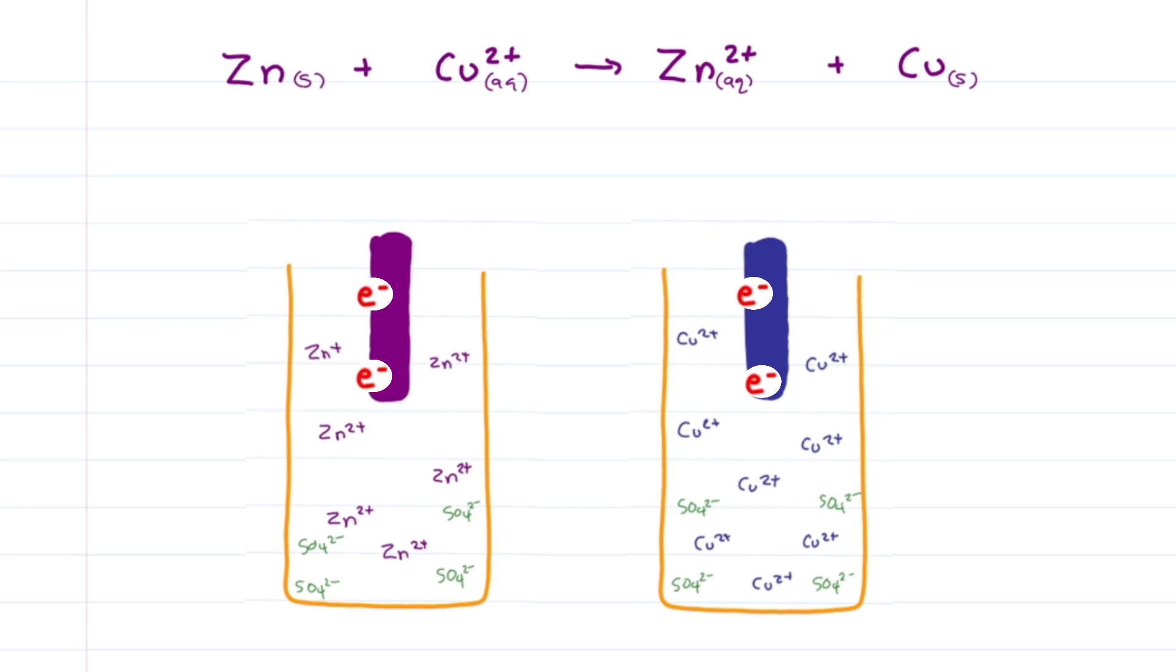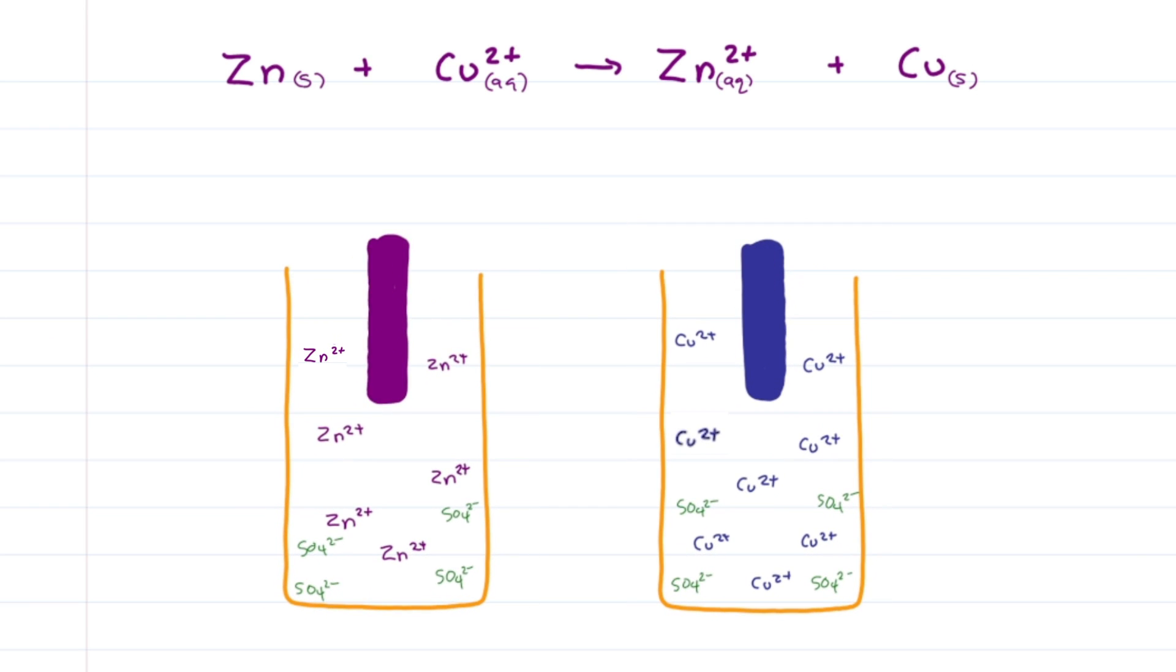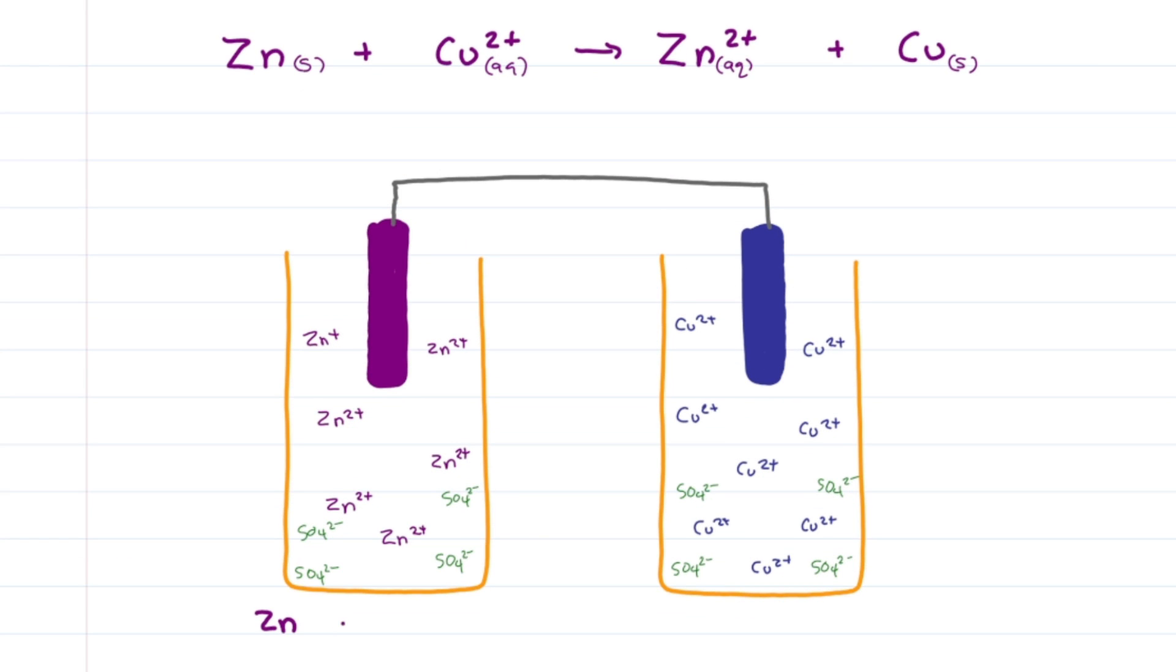And now for the electrons. Wait, they're not connected. We need a non-reactive conducting wire connecting the two electrodes to allow the electrons to flow between the half cells, completing the reaction. The half reactions are zinc solid goes to zinc 2+ plus two electrons, and copper 2+ plus two electrons going to copper solid.